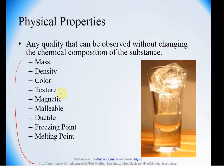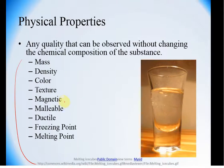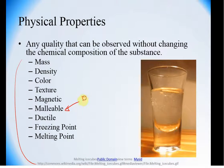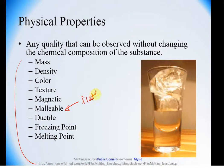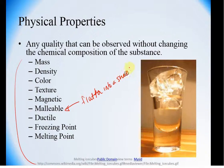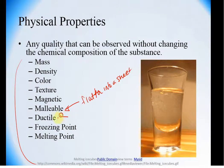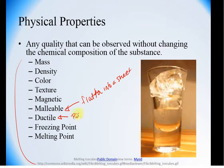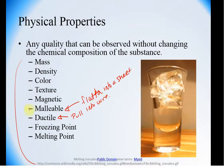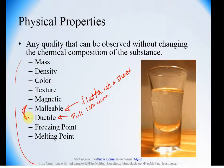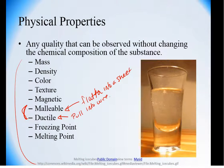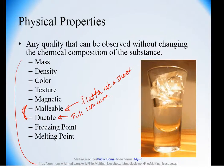You can identify the color, the texture, see if something is magnetic, see if something is malleable — which means you can flatten it into a sheet — or ductile, meaning you can pull it into a wire. Usually metals are both malleable and ductile, which is why they can be used for things like aluminum foil or copper wiring.